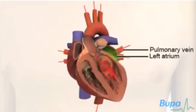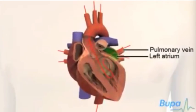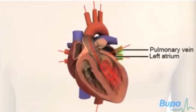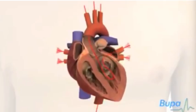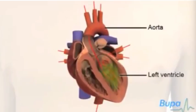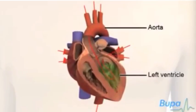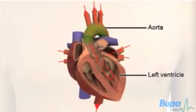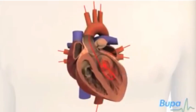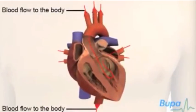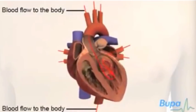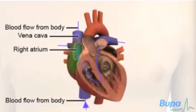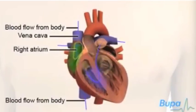The left atrium receives oxygenated blood from the lungs via the pulmonary veins. This blood then passes into the left ventricle, which pumps it into the aorta, which then carries it to the rest of the body. The right atrium receives unoxygenated blood from the rest of the body via the vena cava, which then passes into the right ventricle.